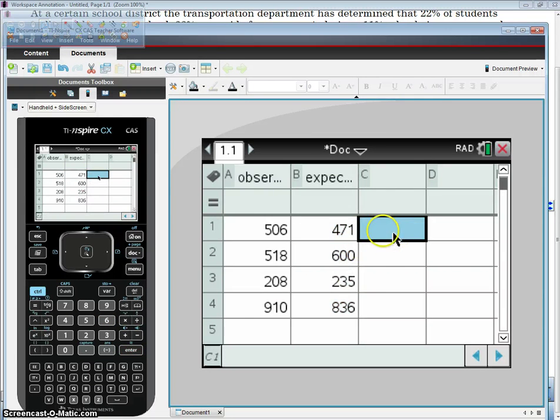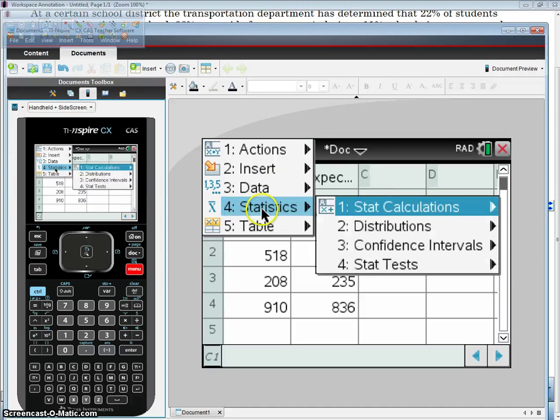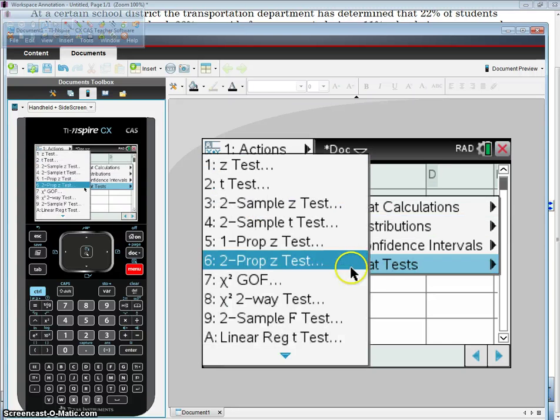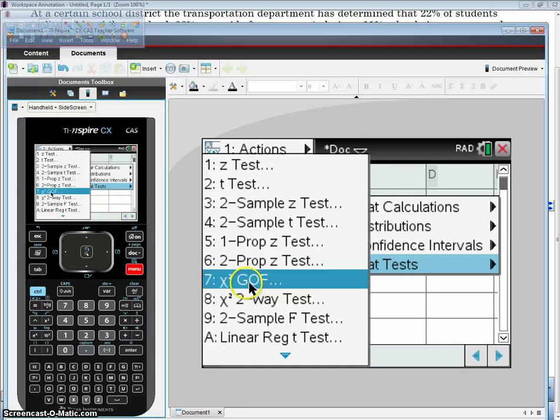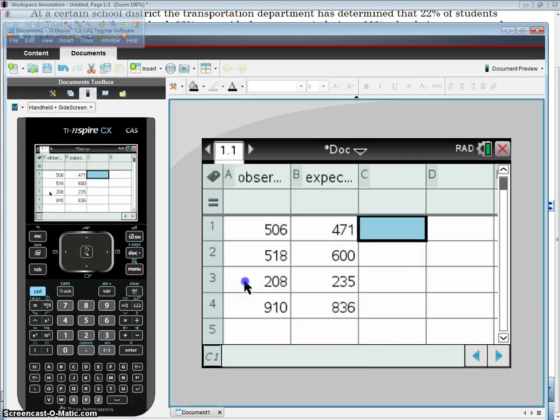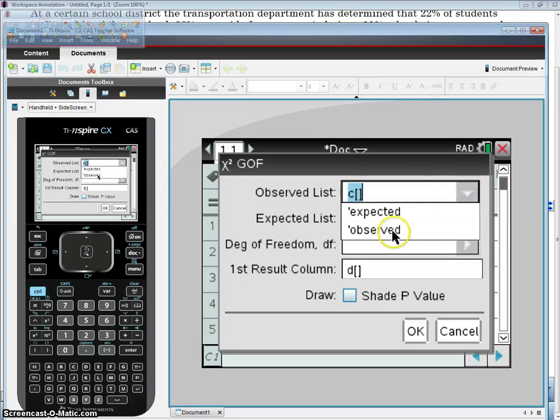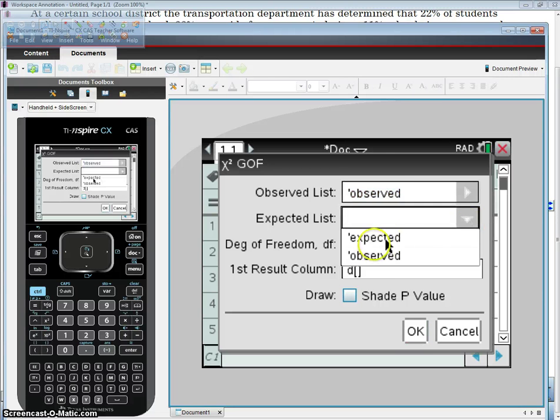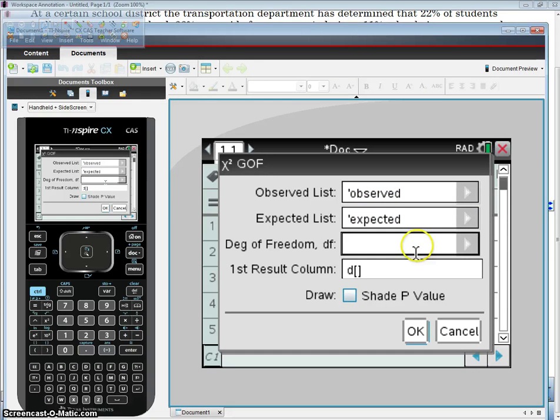In the next column, I'm going to run my chi-squared test. I'm going to hit Menu, Statistics, Stat Tests, and select chi-squared goodness of fit. We'll talk about the two-way test in the next video. My observed list is observed, my expected list is expected, and my degrees of freedom is three. I'm going to write my result and have it shade my p-value so I can see my chi-squared graph. Hit OK.